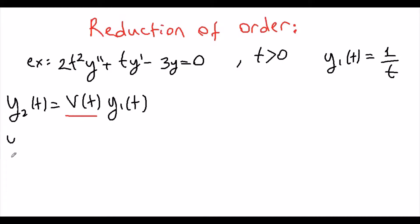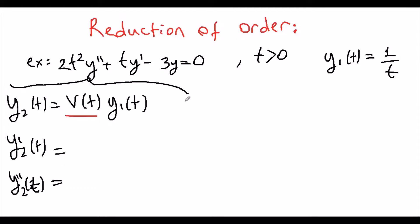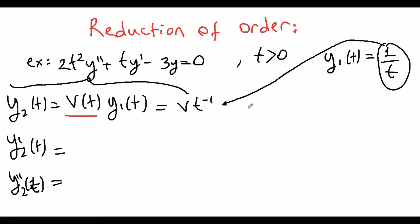Our approach is to take the derivative and second derivative of y2, then plug them into the original problem to solve for v. We rewrite y2 = v·t^(-1), since 1/t = t^(-1). Using the product rule, y2' = v'·t^(-1) - v·t^(-2).